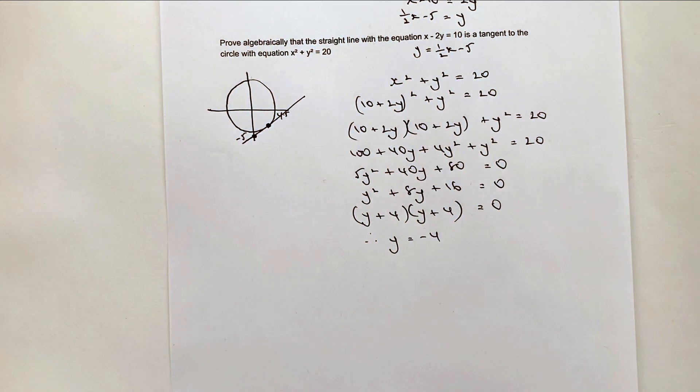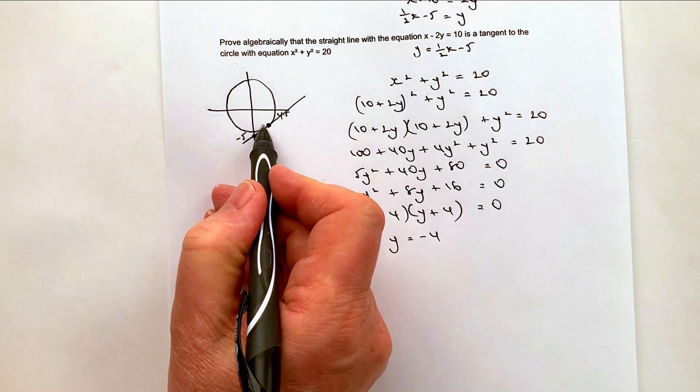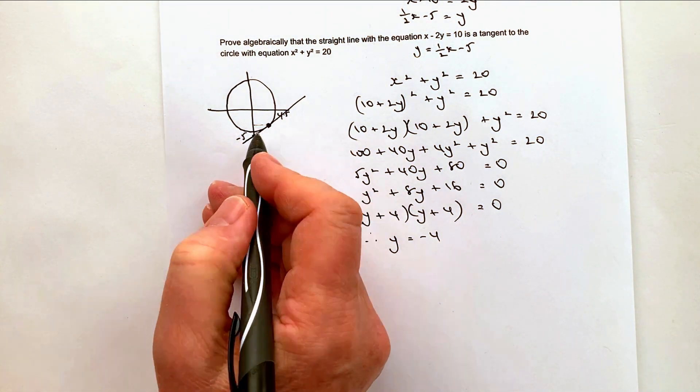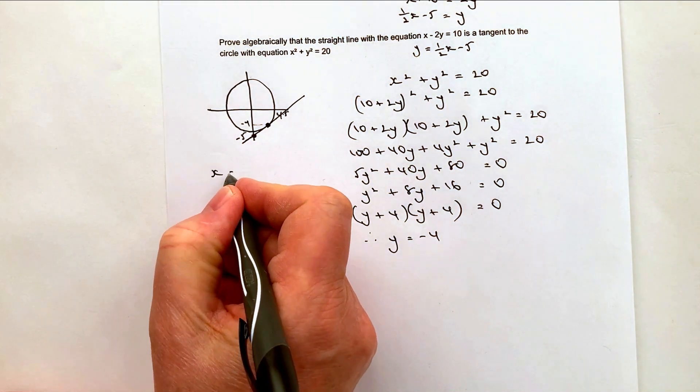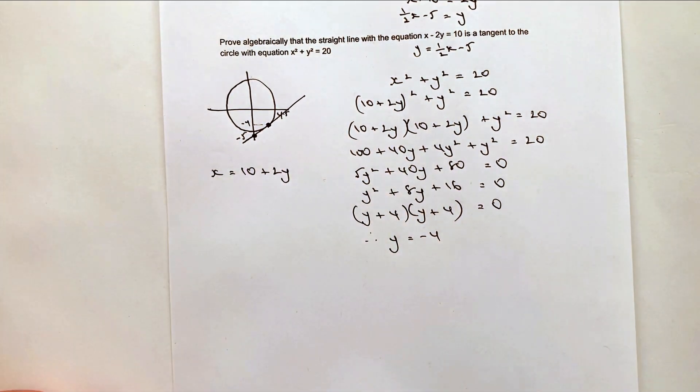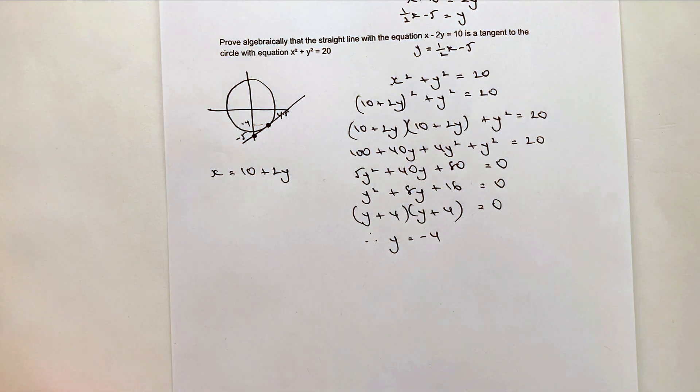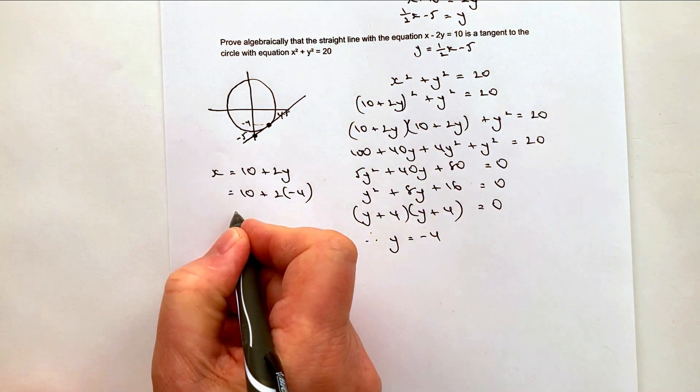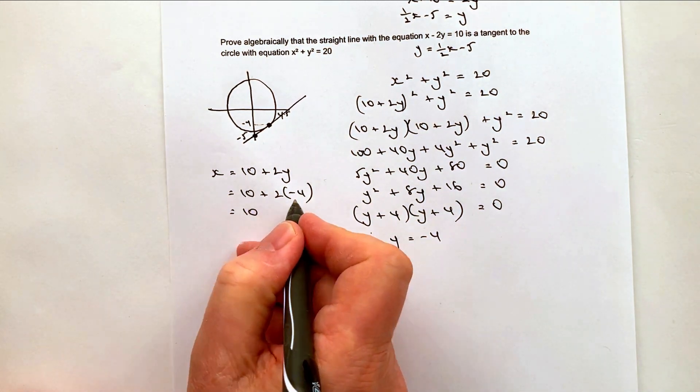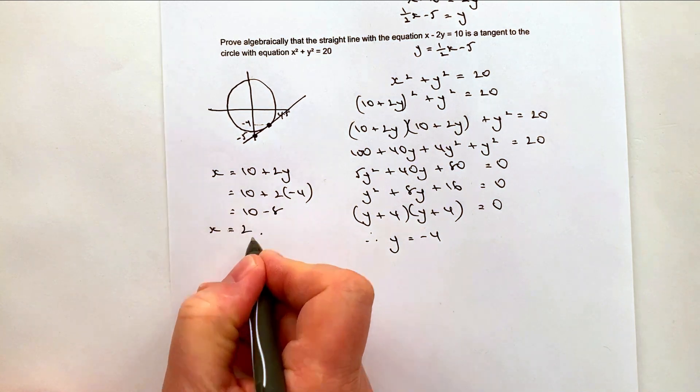So that's looking good. We've got our y value, which is minus 4. So we then take that value of minus 4 and plug it into the equation for x. As we've already said, x equals 10 plus 2y. So we take that minus 4 and pop it into the equation. I've got 10 plus 2 times minus 4. Well, that's 10 minus 8. Therefore, x equals 2.